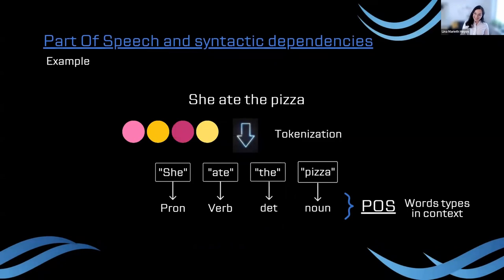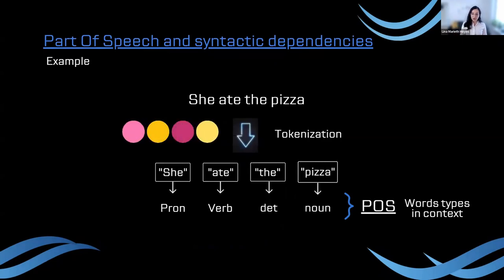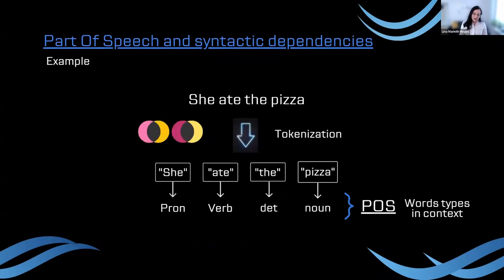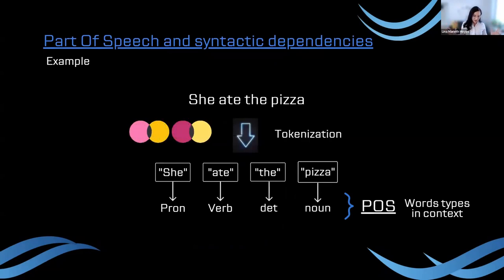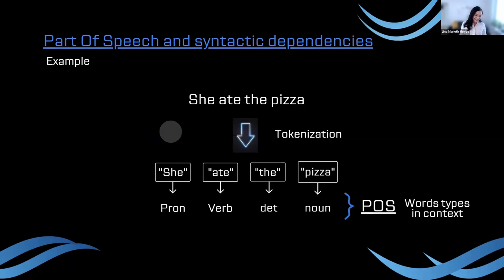We can go one step further: for each token, we can get the predicted POS, or part-of-speech tag. This is more than just splitting the text — we're keeping all the relevant information about every word so we can understand whatever we want from the document, with words in context. In my mind, that is amazing.